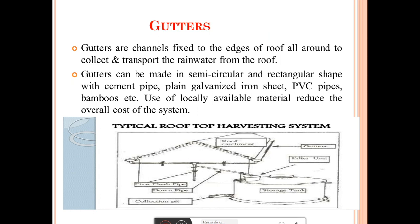The second component is the gutter. Gutters are channels fixed to the edge of the roof to collect and transport rainwater from the roof. These gutters are made in semi-circular or rectangular shape with cement pipe, plain galvanized iron sheet, or PVC pipe. To reduce cost, locally available material can also be used. The main function of the gutter is to collect and transport rainwater to the filter unit.